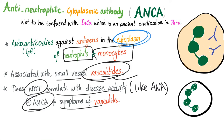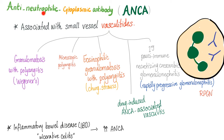A positive ANCA doesn't mean you have symptoms of vasculitis, severe vasculitis, or inflamed vessels right now. It just means it is associated with vasculitis. ANCAs are associated with small vessel vasculitides such as granulomatosis with polyangiitis, microscopic polyangiitis, eosinophilic granulomatosis with polyangiitis — also known as Churg-Strauss.